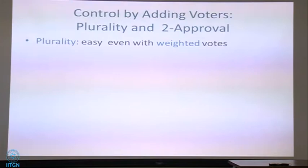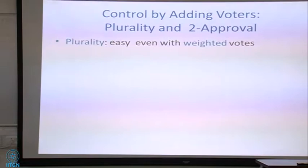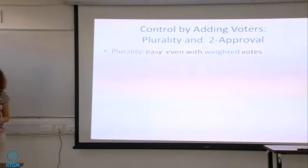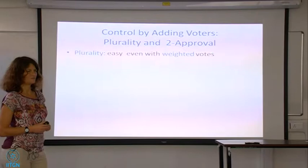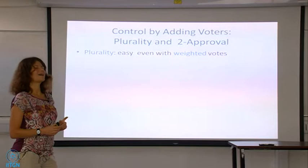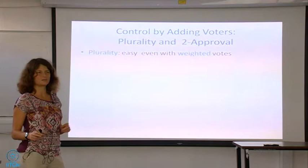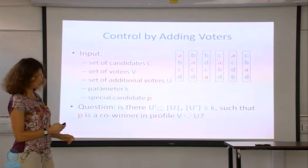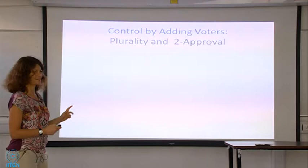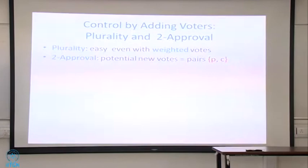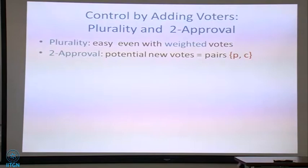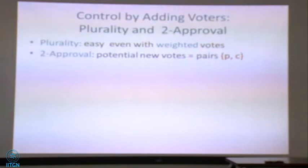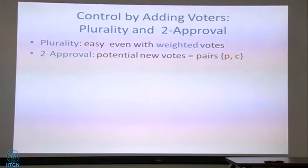In fact, it remains easy for two-approval — the voting rule where each voter approves exactly two candidates. We know voters' preferences in advance; they're a pool sitting aside and we fully know who they are. You can think of potential new votes as just pairs consisting of two candidates. If a potential added vote doesn't rank your preferred candidate in the top two positions, there's no point in recruiting them. You don't have to bring in K people — you can bring in fewer — and you don't want to bring voters who don't help your candidate at all.